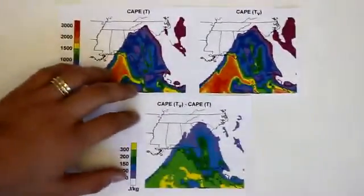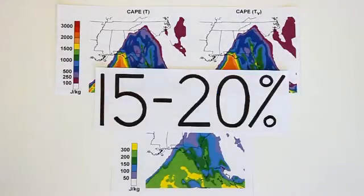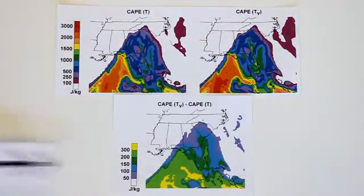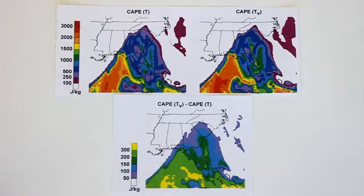TV is always greater than T, so CAPE will be greater everywhere. In some places, the increase will be as much as 15 to 20 percent. CAPE will also increase in aerial coverage, meaning more forecast grids with convective potential.